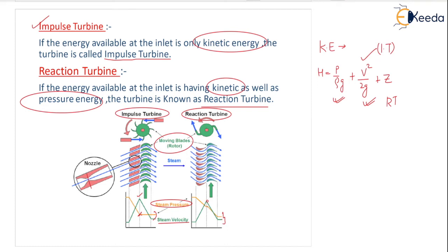In the impulse turbine, the kinetic energy of the water jet acts on the blades causing movement, whereas in the reaction turbine, both the velocity head and pressure head are applied to drive the runner. The reaction turbine runner moves in the anticlockwise direction due to the combined effect of the water jet direction and the reaction force.